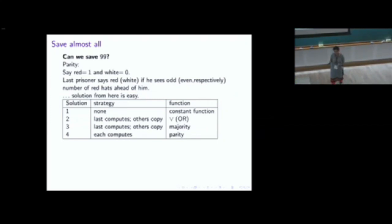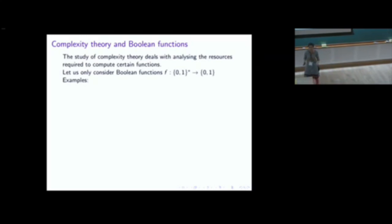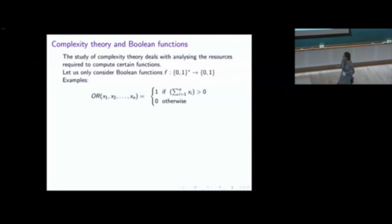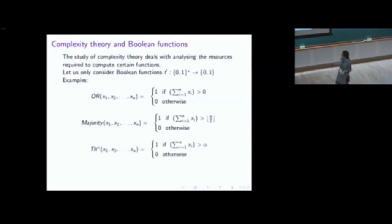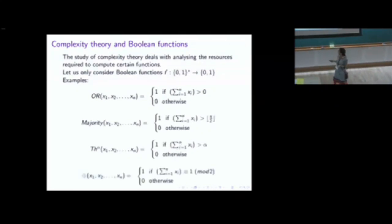There is a whole area of study of Boolean functions — functions from {0,1}* to {0,1} — called complexity theory and Boolean functions. Examples of such functions include the OR function, the majority function, a threshold function (which triggers true if there are at least α ones in the input), and the parity function (which triggers true if there are an odd number of ones).